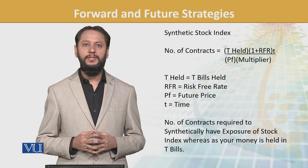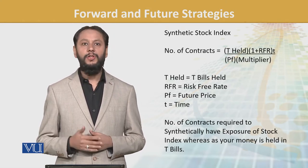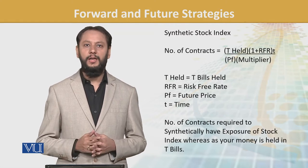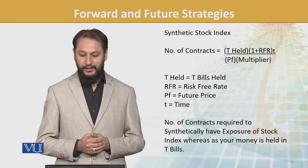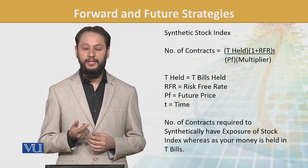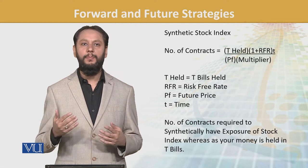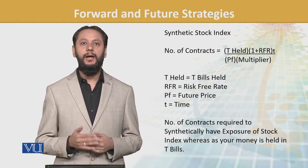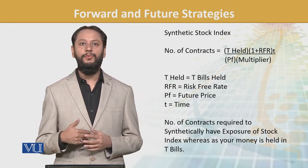To know the number of contracts, you take the value of your T-bills portfolio and recognize that T-bills generate risk-free returns. So we calculate: T-bills value times (1 + rf) raised to the power of time — the investment horizon. We divide that by PF times multiplier, where PF is the current futures price trading right now, and the multiplier could be 200 or 100 depending on the index. This gives the number of contracts to enter for creating a synthetic index.